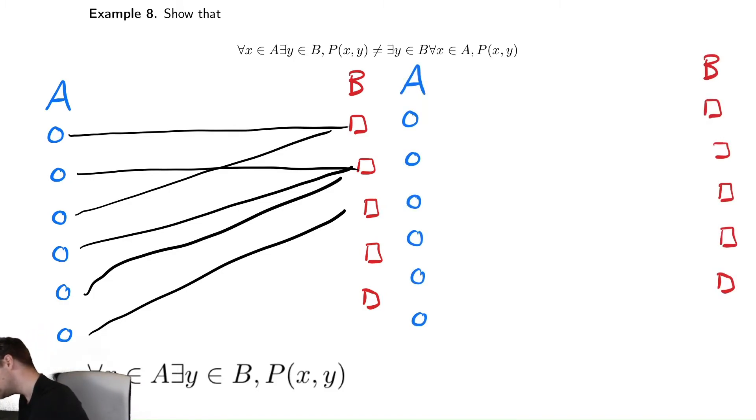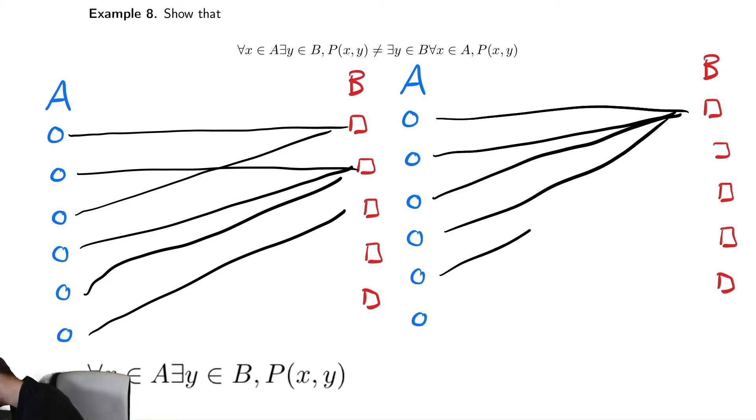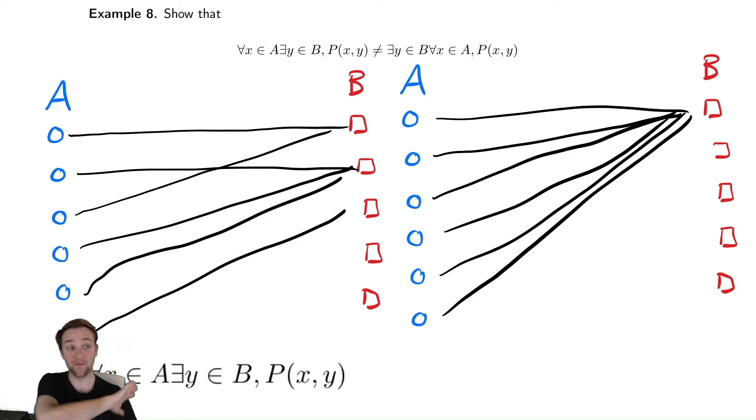And the thing on the right hand side says that there is something in B such that for every single thing in A, there's something in B that is connected to everything in A. So there's a single square which is connected to every single circle. So what we're trying to say here is that there's one special B such that everything in Y satisfies this, which is different than the first picture.